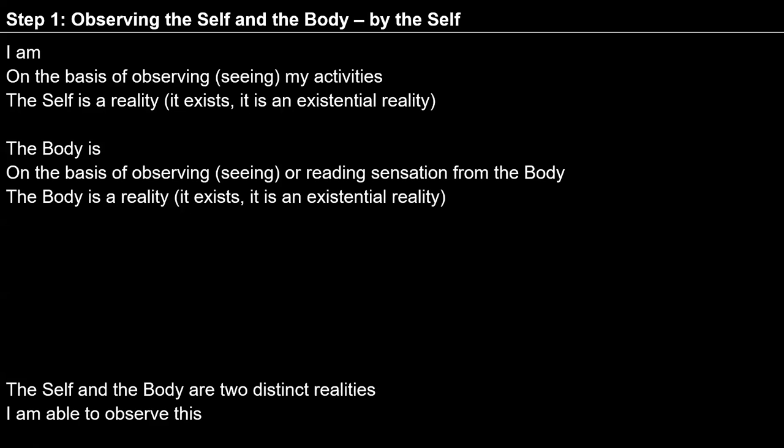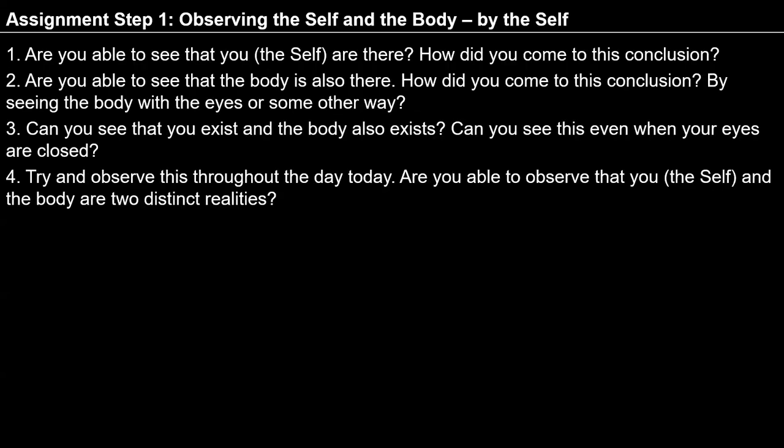I exist because I can observe activities in me directly, like desire, thought, and expectations. The body exists because many physical chemical activities are going on at the level of body. In exercise 1, with 7 steps, I observed myself and my consciousness. In exercise 2, we are focusing outside with the help of this consciousness — observing the body and other things interacting with it.